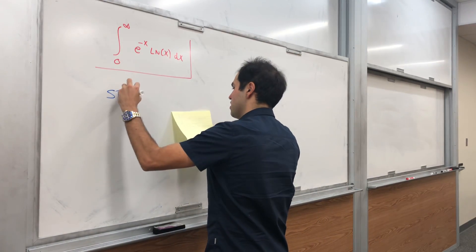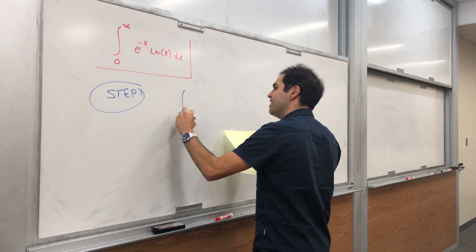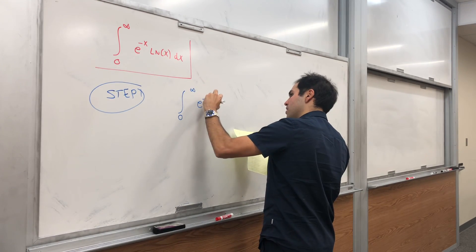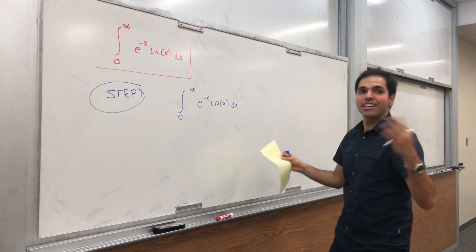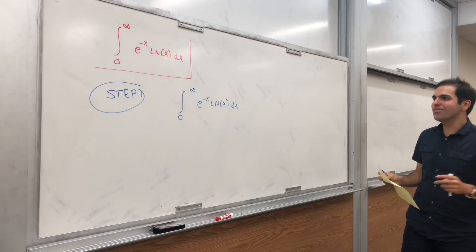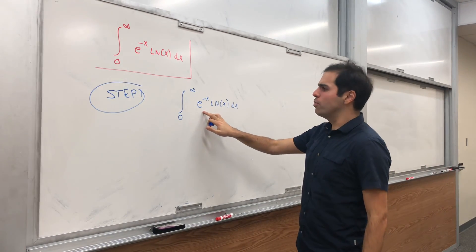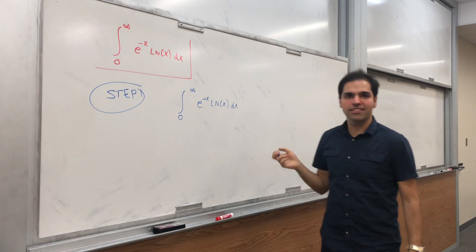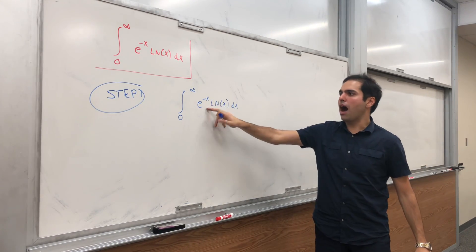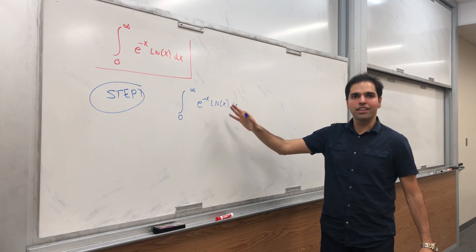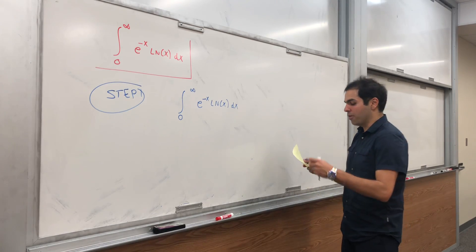So step one. First of all, good luck integrating by parts — I don't think it will help you much. We want to get rid of this e to the minus x, because it turns out it's easier to deal with powers of x instead, since ln of x works very well with powers.